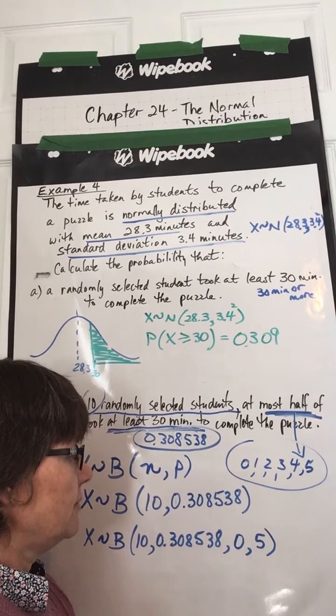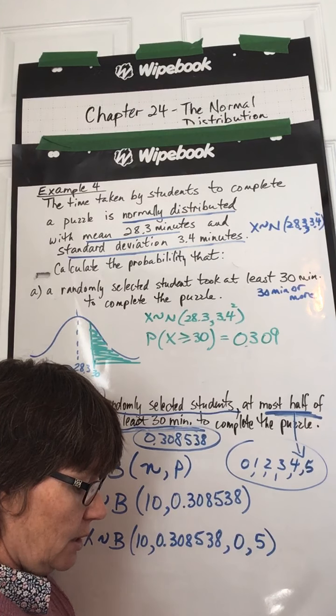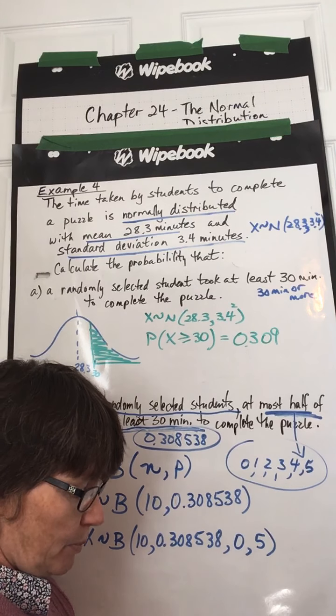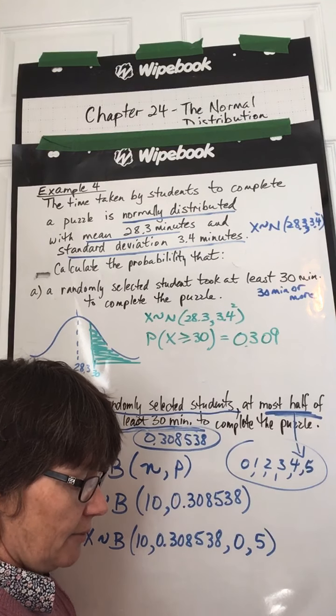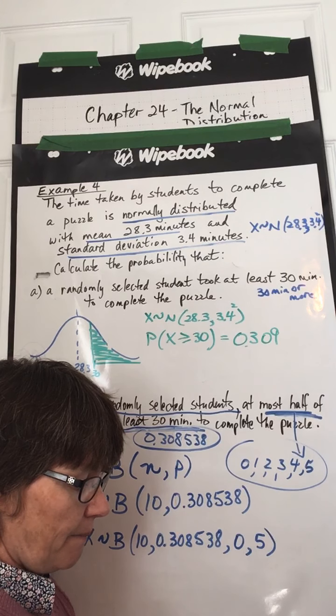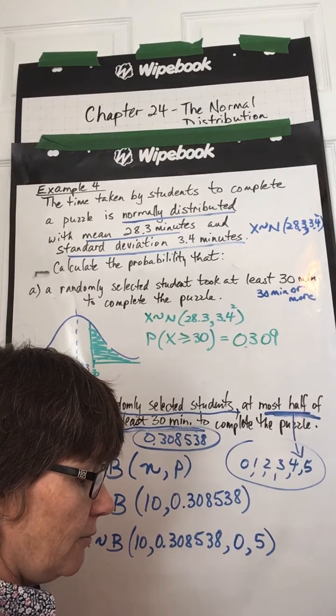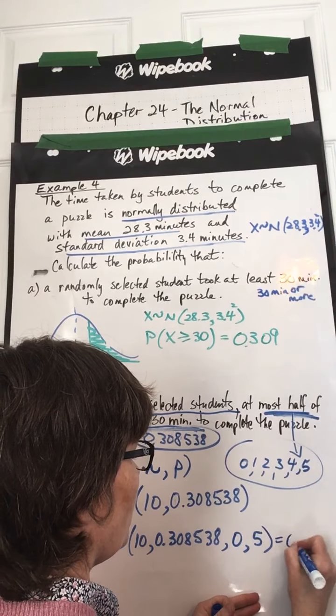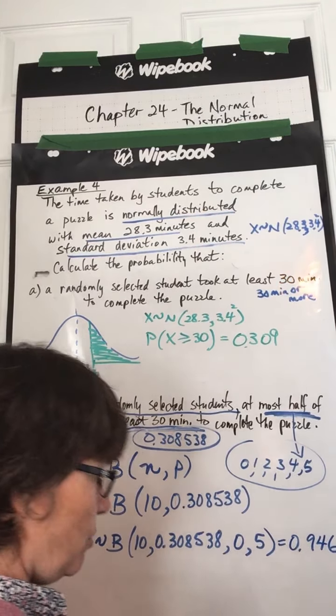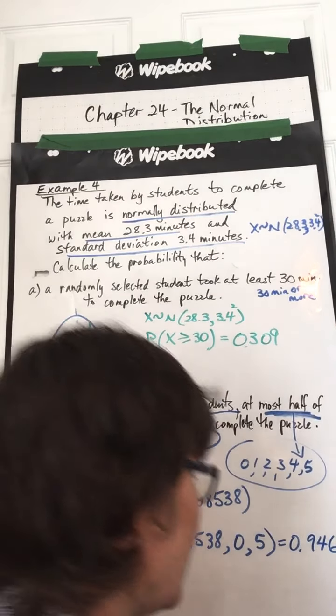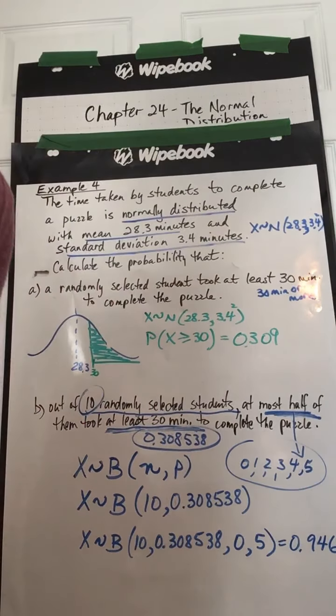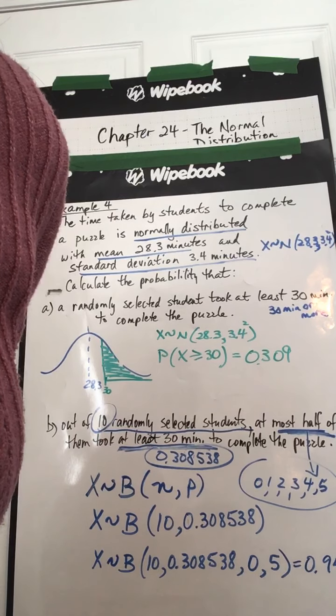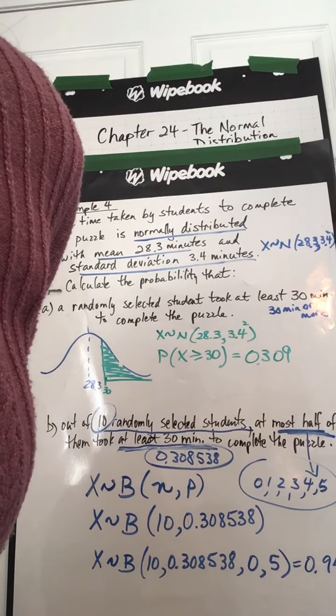Put in the probability of success, 0.308538. Put in the lower bound, which is 0. Put in the upper bound, 5. And press OK. 0.946. 0.946. Let's see if that's the same answer they got in the textbook. 0.938.